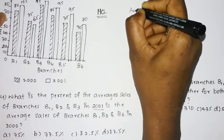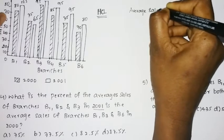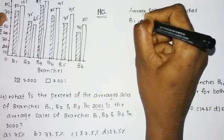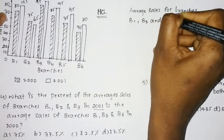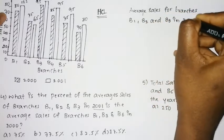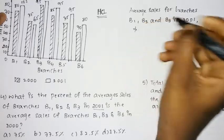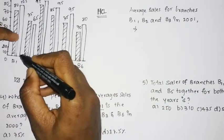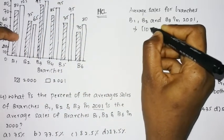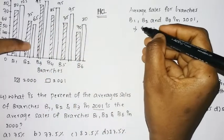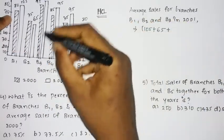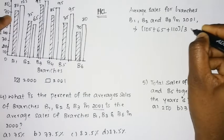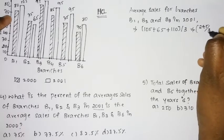First, we find the average sales for branches B1, B2, and B3 in the year 2001. B1 is 105, B2 is 65, and B3 is 110. So we have 105 plus 65 plus 110 divided by 3, which gives us 280 divided by 3. Wait — upon simplification you get 245 divided by 3.